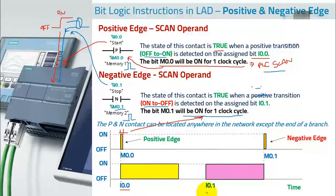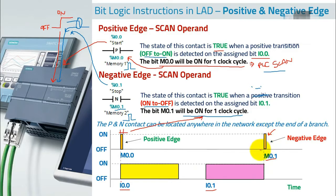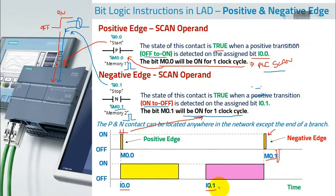For the negative edge, when you turn on I0.1 nothing will happen because it's a negative transition. But when you turn off this bit, at that moment M0.1 produces a pulse. It is again a positive-going pulse, but it occurs at the negative edge of your input — it comes at the end of the pulse. That's the only difference.